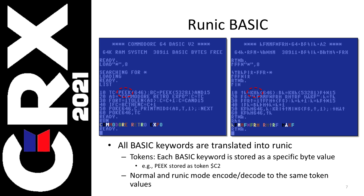And this is what BASIC looks like. On the left is when you boot up in normal mode; on the right, runic mode. You can see I've circled the word PEEK. If you load this program, you'll see the PEEK statement written out that way. If you load it in runic mode, you'll see it's been collapsed down to three characters using the ligature. So all BASIC keywords get translated into runic. Each BASIC keyword is stored as a specific byte value — that is its token value — how it's stored in memory and on disk. Both the normal and runic modes encode and decode to the same token values for compatibility.